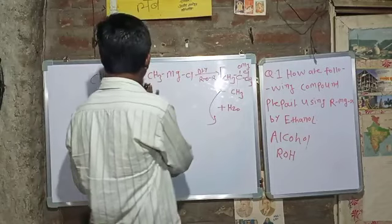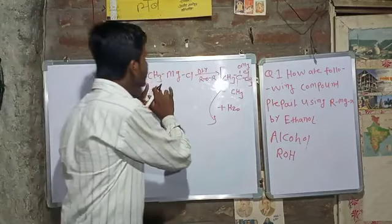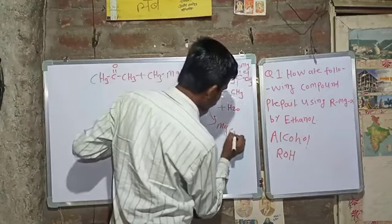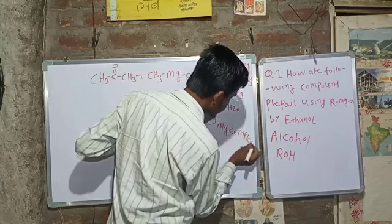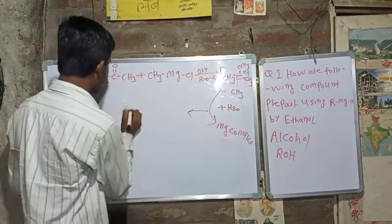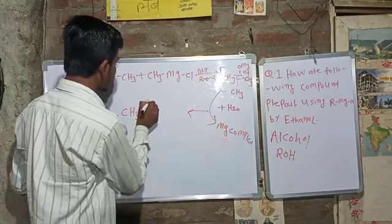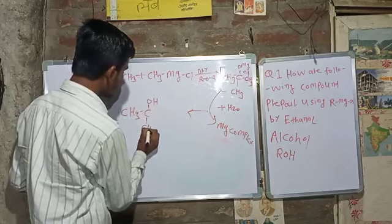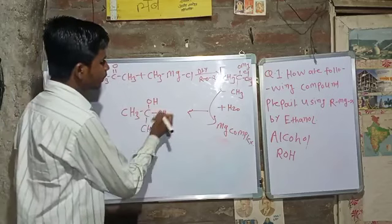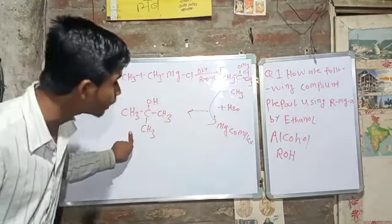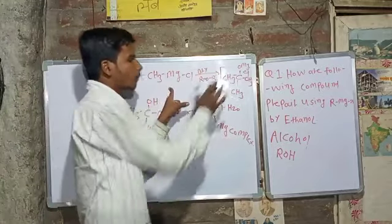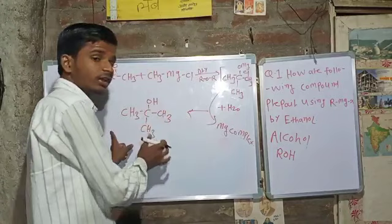This is the Grignard-RMgX complex. The MgX complex plus water gives rise to what you get — tertiary alcohol. Ketone plus Grignard reagent in the presence of dry ether gives the MgX complex, plus water, giving tertiary alcohol. We get tertiary alcohol.